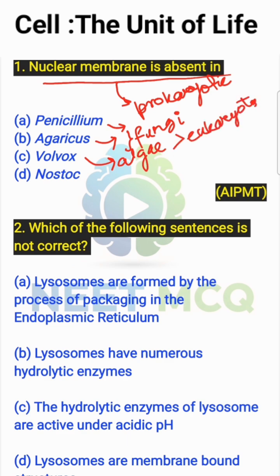Eukaryotic cells have a true nucleus, and a true nucleus contains a nuclear membrane. Since the question asks where the nuclear membrane is absent — Nostoc. Nostoc is a cyanobacterium.